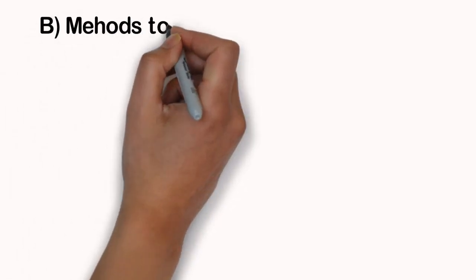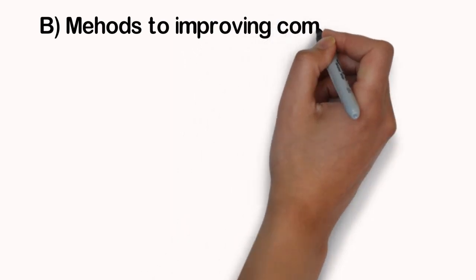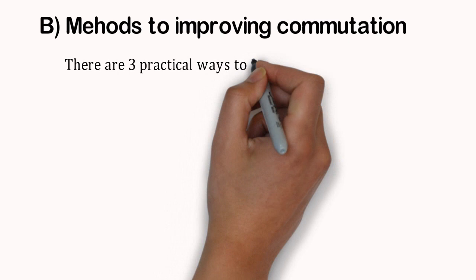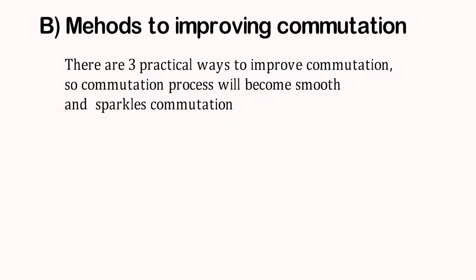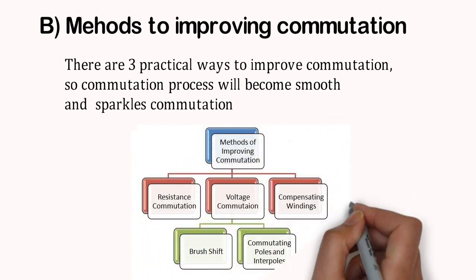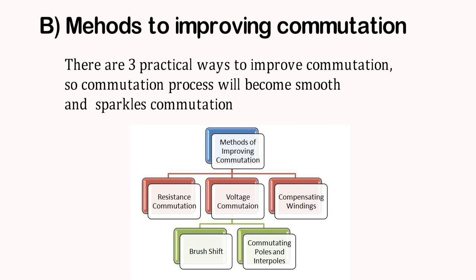In this phase of video, we will learn about methods to improve commutation. There are three practical ways to perform sparkless commutation: resistance commutation, voltage commutation, and use of compensating winding. Here, we will see two of them briefly.